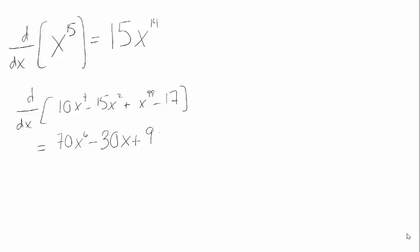Again, I bring down this 99, and I drop my power by 1 and get 98. 17 is a constant, so its derivative is 0, but also I can think that 17 is the same as 17 times x to the 0. So when I differentiate it, I bring down the 0, and I subtract 1, but this times 0 means the whole thing is just going to be 0.